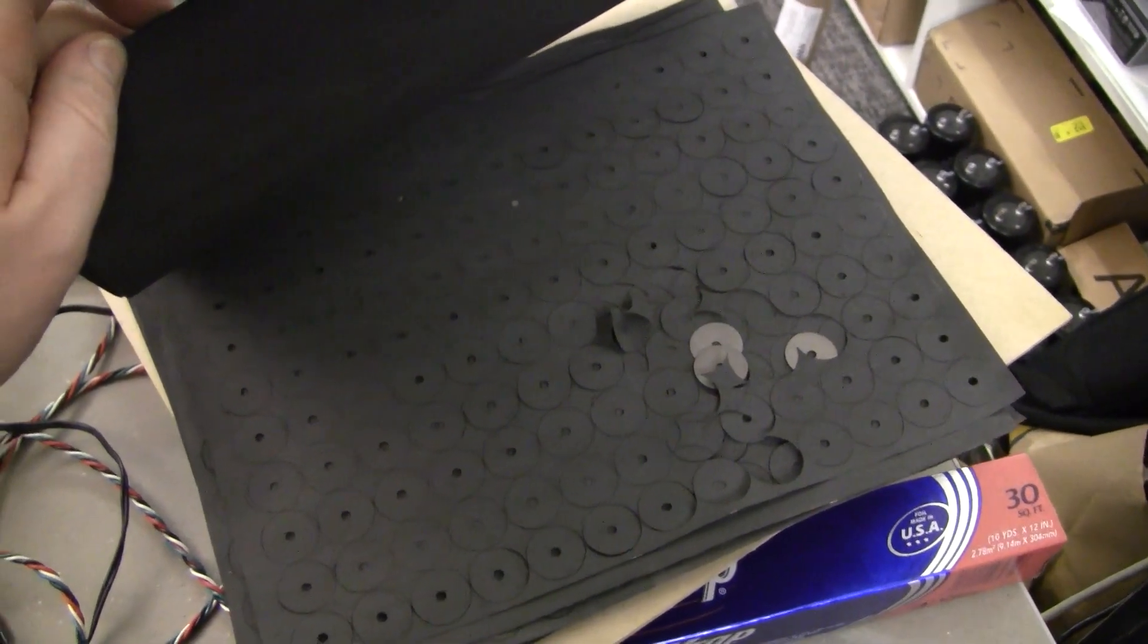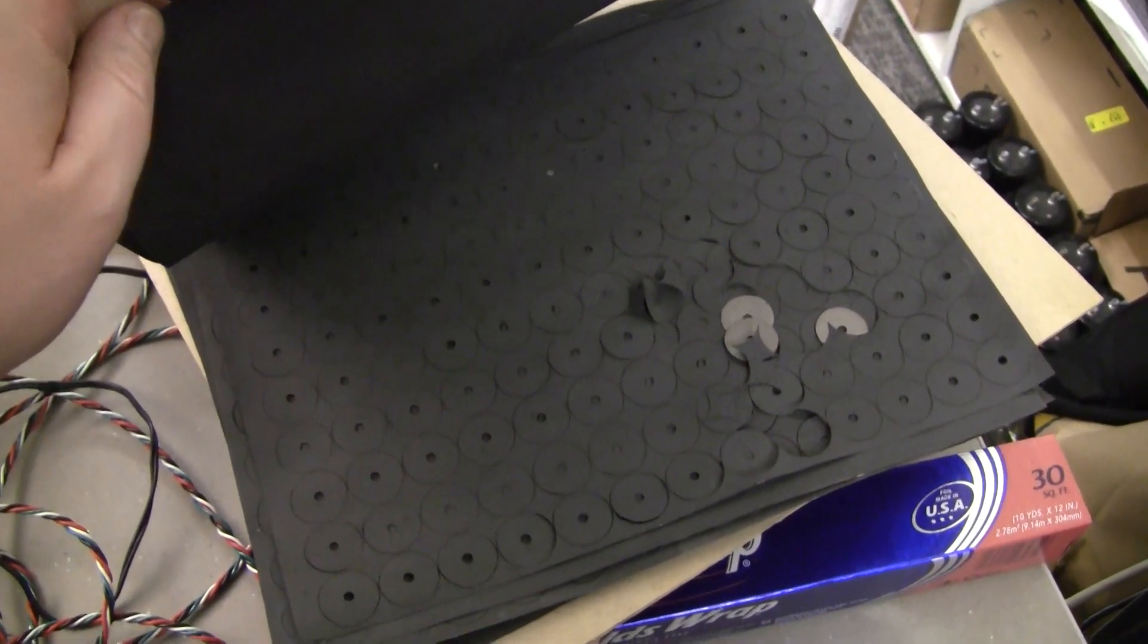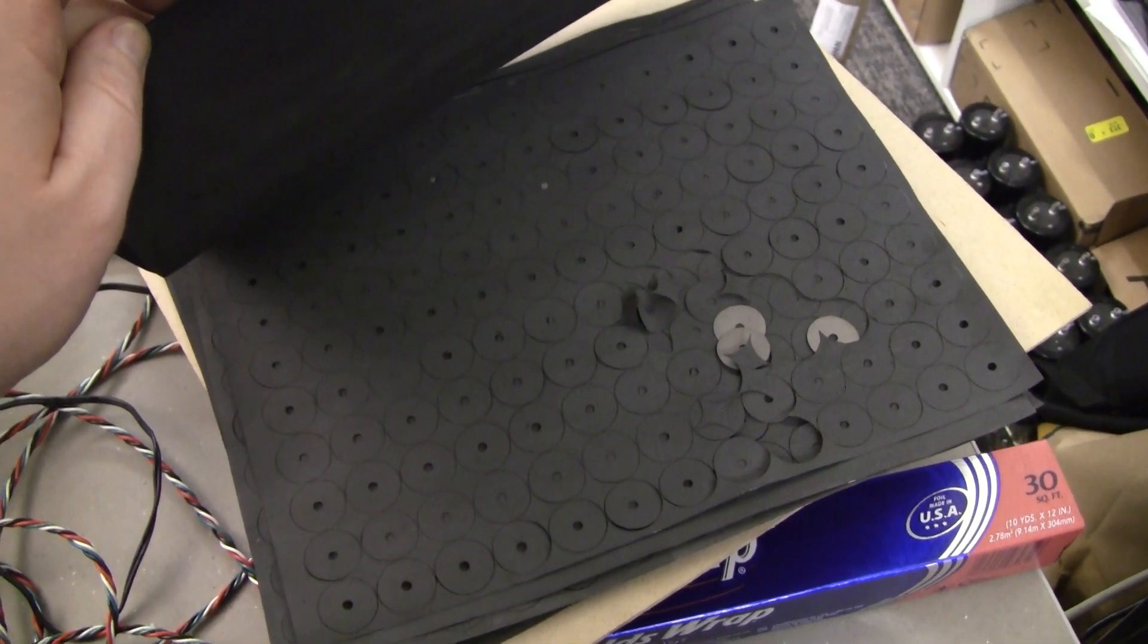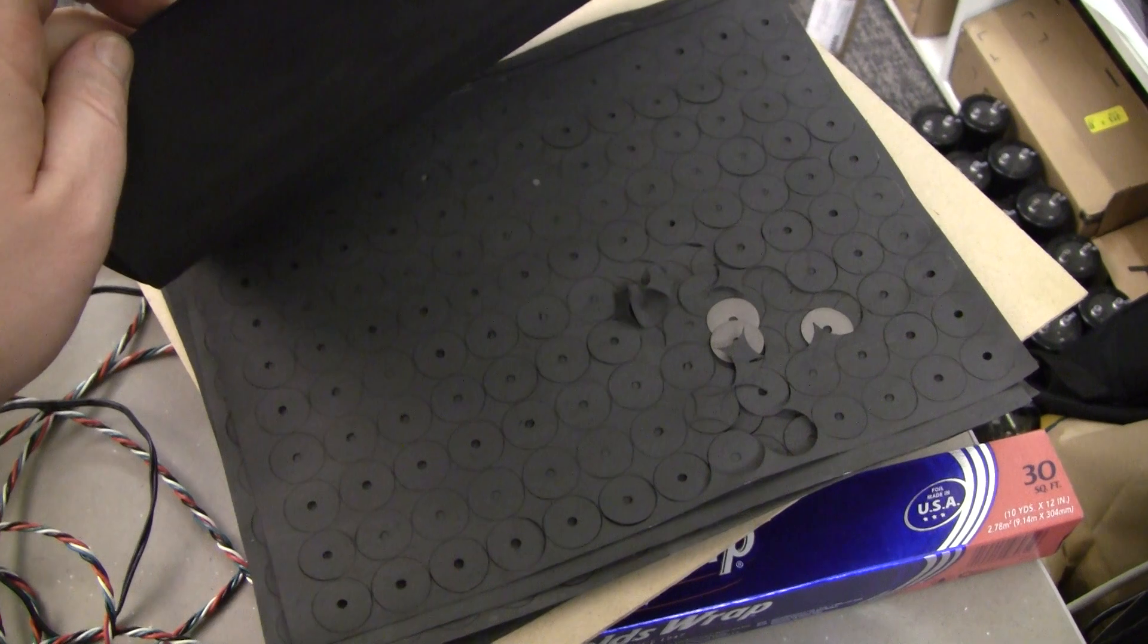These ones were cut with a laser cutter which chars the edges and I believe causes leakage that ultimately ruins the dry pile pretty quickly, or at least reduces its output.